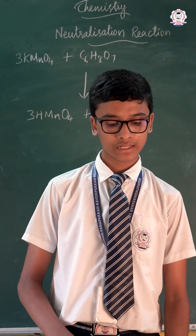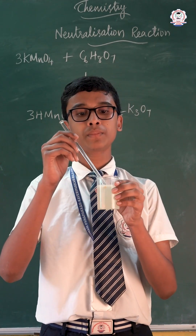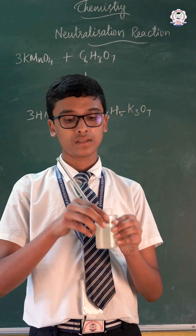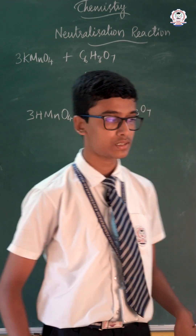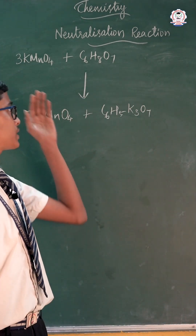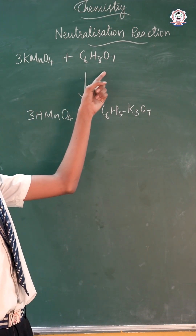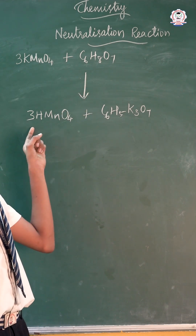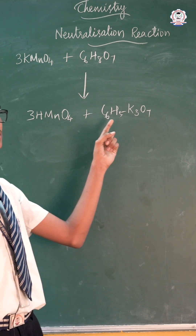We can observe that the purple color of the potassium permanganate solution disappears. The equation behind this reaction is: potassium permanganate reacts with citric acid to form permanganate acid and potassium citrate. Thank you.